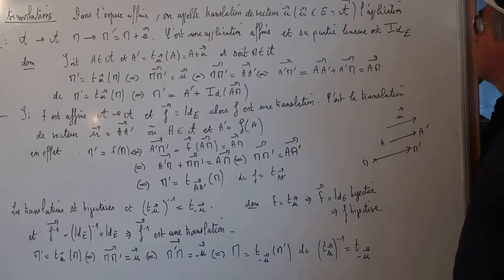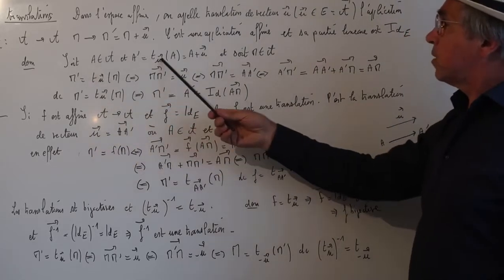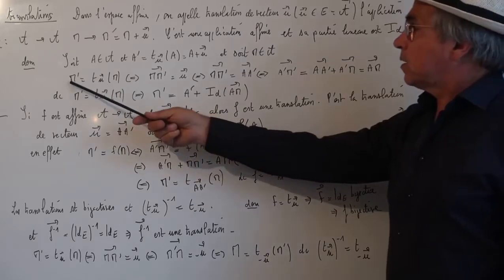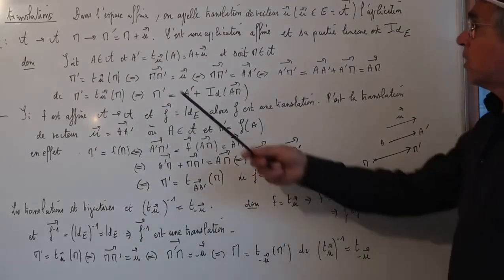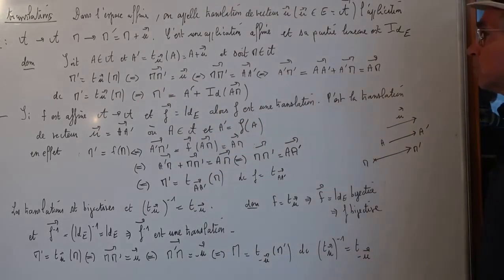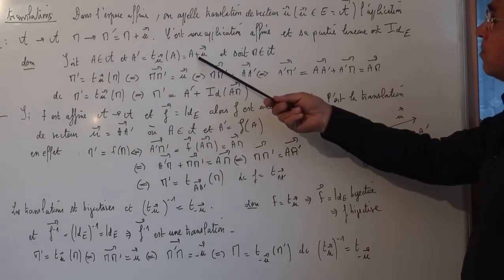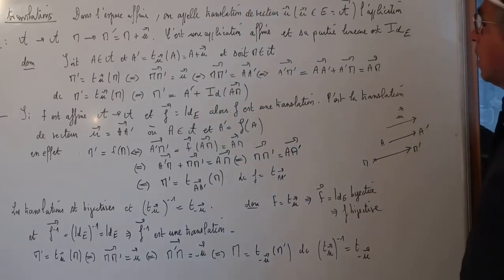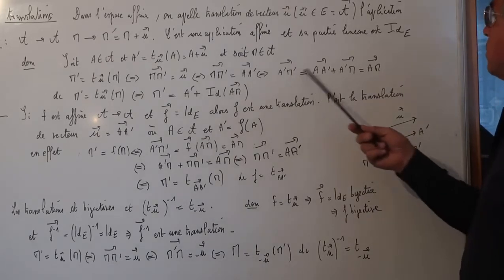C'est une application affine et sa partie linéaire c'est l'identité de A. En démonstration, si je prends un point A, son image A' égale A plus vecteur U, et M un autre point de A. Dire que M' est le translaté de M suivant le vecteur U équivaut à dire que le vecteur MM' égale vecteur U, ce qui équivaut à dire — puisque j'ai la même chose avec A — que vecteur MM' égale vecteur AA'.